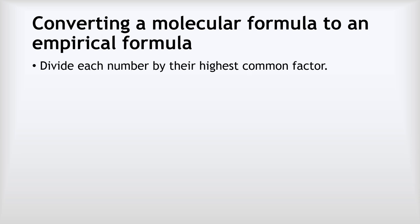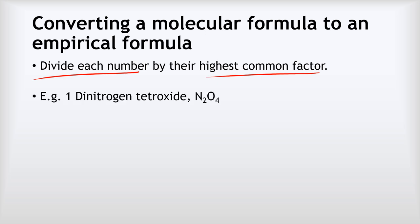One of the tasks you might be asked to do is to convert a molecular formula to an empirical formula. This is super easy — we divide each number in the formula by the highest common factor of those numbers. For example, dinitrogen tetraoxide is N2O4. The highest common factor of 2 and 4 is 2, because both numbers can be divided by 2. So for nitrogen: 2 divided by 2 gives 1. For oxygen: 4 divided by 2 gives 2. Therefore, the empirical formula becomes NO2.